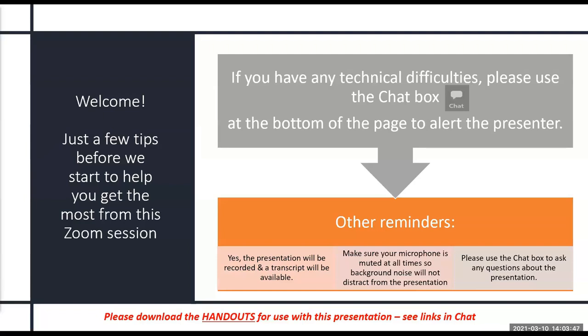The links to the handouts and the guided notes are in the chat. If you don't see them, please raise your hand and they'll be posted again. There are four of them: the guided notes, the keyword brainstorming chart, the power search tools, and the how-to-find-it general resources handout. Those are the ones we are going to be using today.